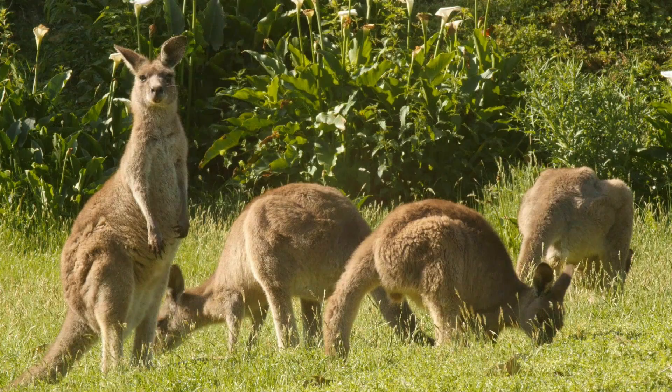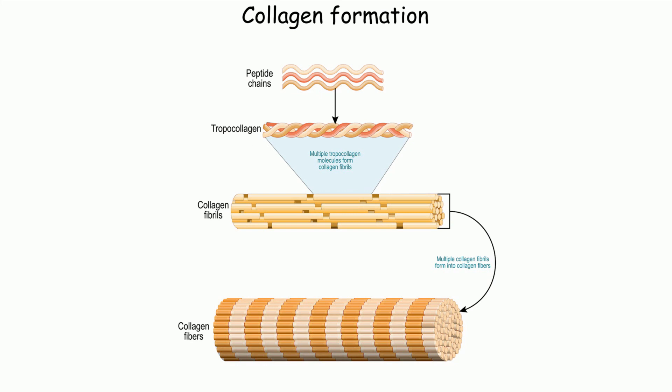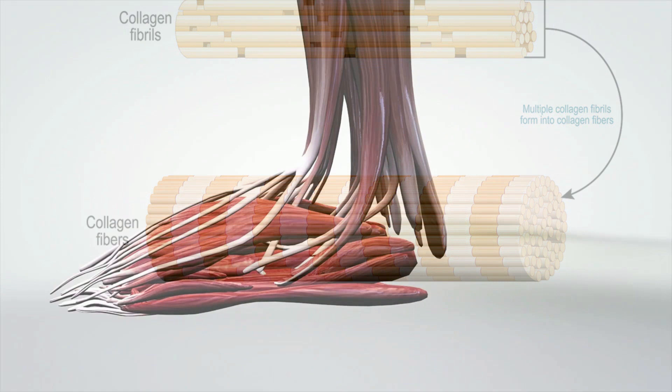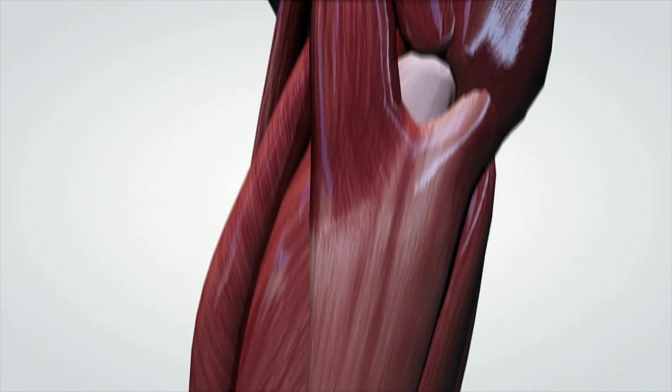They all use the protein collagen. Collagen is the most abundant protein in the human body and is found in bones, muscles, skin, and tendons. It is the substance that holds the body together.